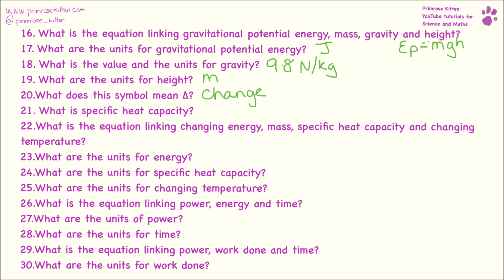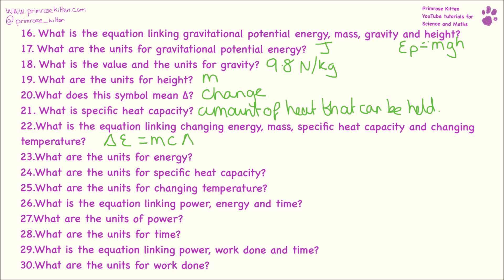What is specific heat capacity? That is how much heat something can hold or absorb. What is the equation linking change in energy, mass, specific heat capacity and change in temperature? Change in energy equals mass times specific heat capacity times change in temperature. What are the units for energy? Energy is measured in joules. What are the units for specific heat capacity? That is joules per kilogram degrees C. What are the units for change in temperature? That is degrees C.